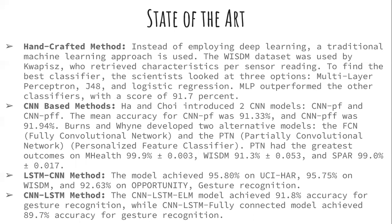LSTM stands for Long Short-Term Memory and CNN is Convolutional Neural Network. In the handcrafted method, instead of deep learning, traditional machine learning approaches are used. The Wisdom dataset was used, retrieving characteristics per sensor reading. To find the best classifier, the researcher examined three options: multi-layer perceptron, J48, and logistic regression. The multi-layer perceptron outperformed the others with 91.7% accuracy.